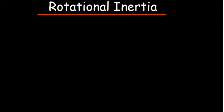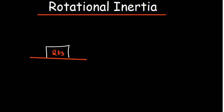Let's talk about rotational inertia. Inertia is basically the tendency of a body to resist its motion, and inertia depends on mass. If you have an object with a mass of 2 kg and another object with a mass of 10 kg, the inertia gets bigger as the mass gets bigger.